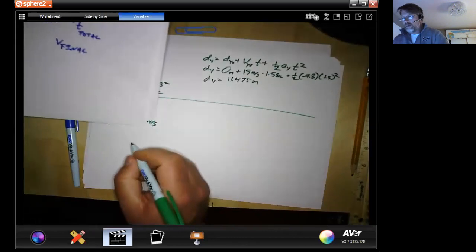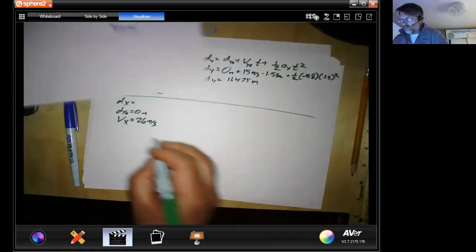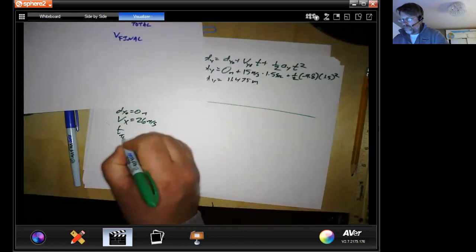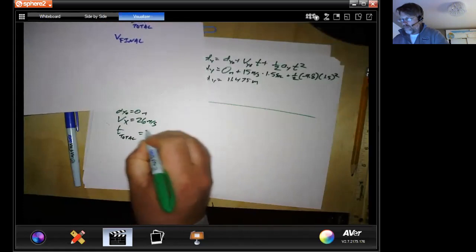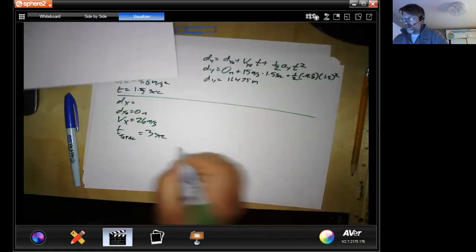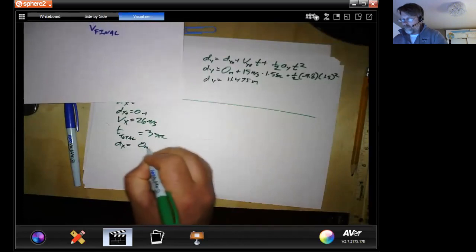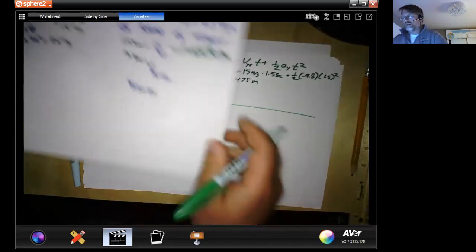We know our velocity in the x was 26. We also know our total time was 3 seconds. So that's important. We also know our acceleration.